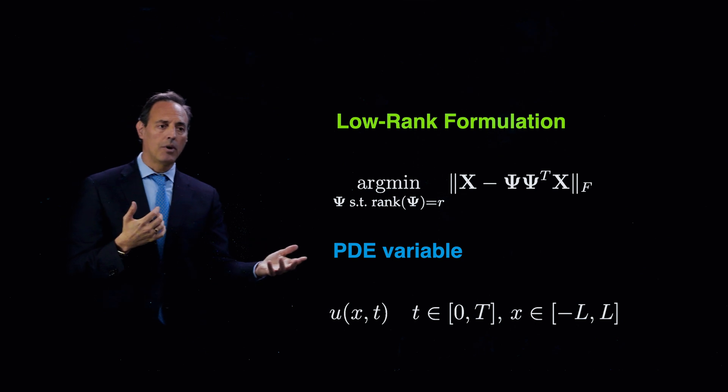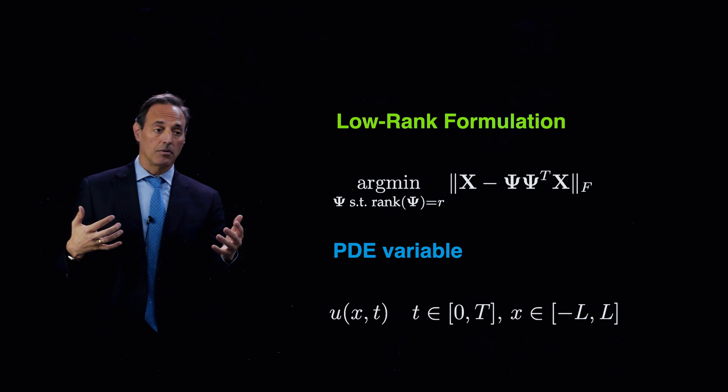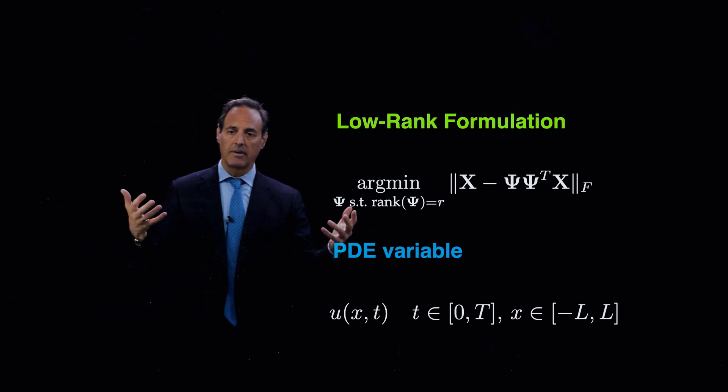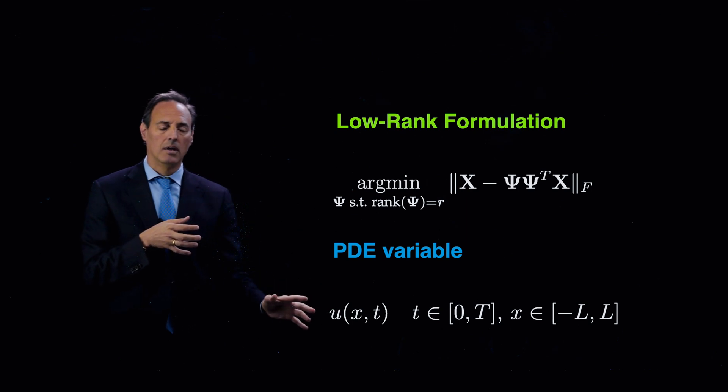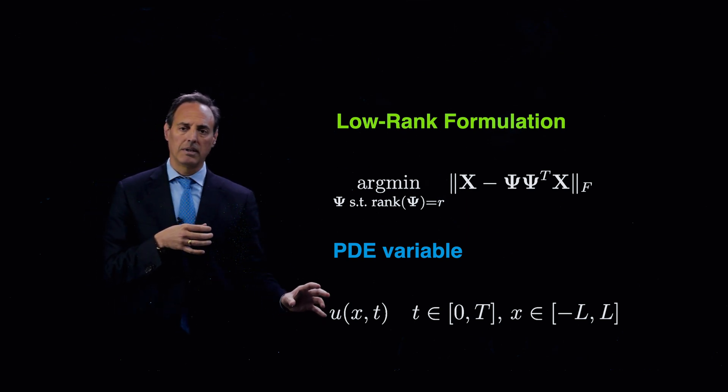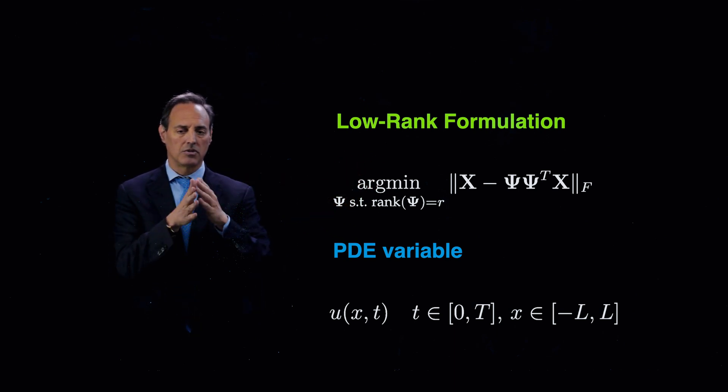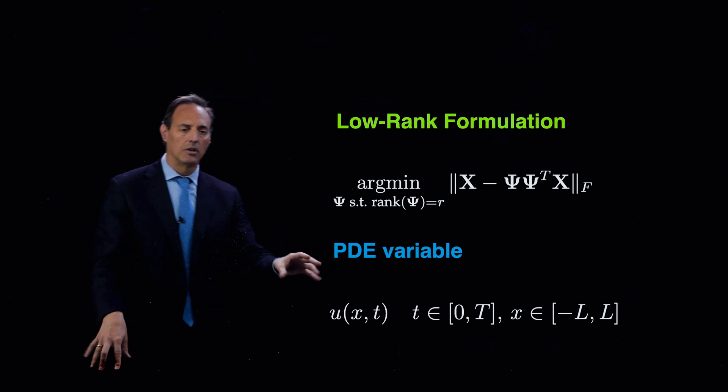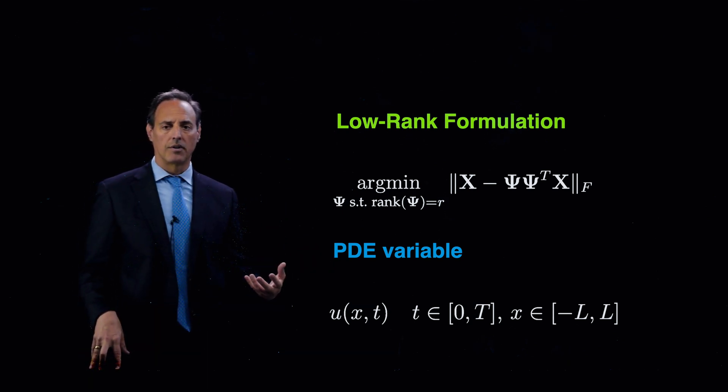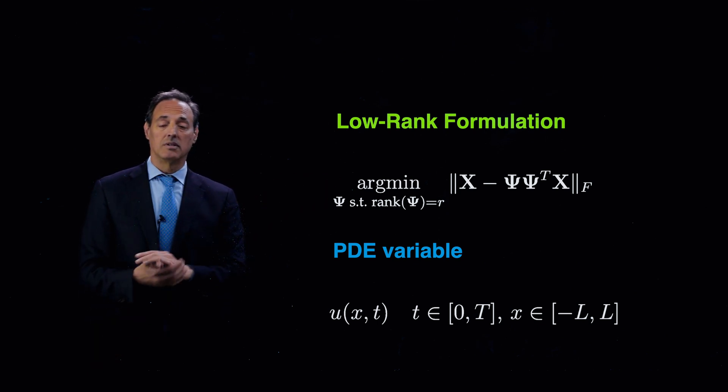But we want to go to our PDE variables again, which is u(x,t), and t is over some domain big T, x is over negative L to L. One of the questions you can ask is, but this is a continuous variable, and how do we think about approximating this continuous variable with some discrete representation here, which is discretized space, discretized time, and doing the SVD? I want to come and address this because there's a formulation here in the continuous space that we can work with even from a theoretical point of view, but also show you how it connects back up to this here.